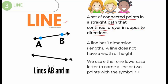A line has one dimension — that is only length. It does not have width or height. We can name a line in two ways: one is with capital letters and another is with small letters. For example, this is written as line AB. It extends both sides endlessly, and also it is named as line M.